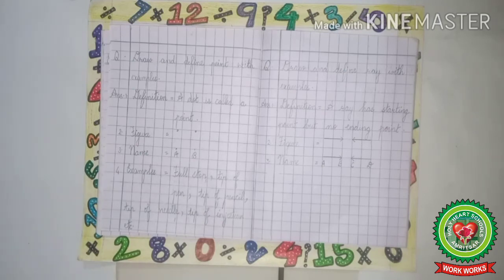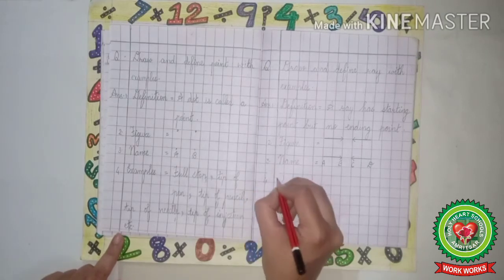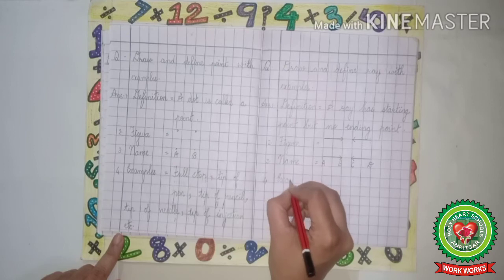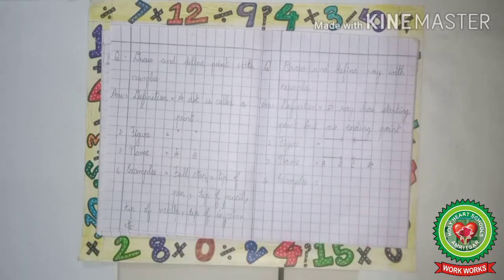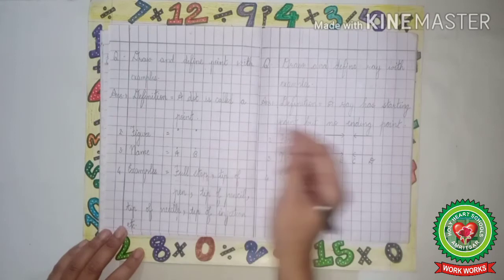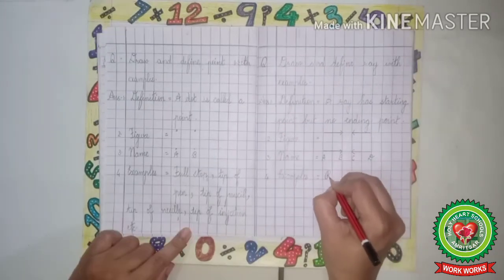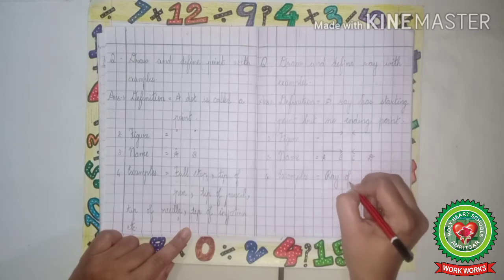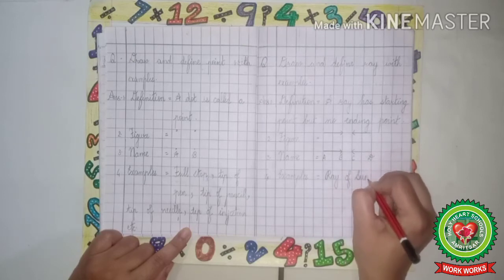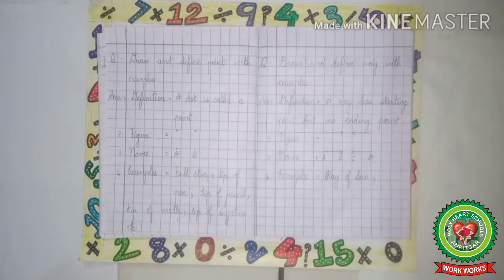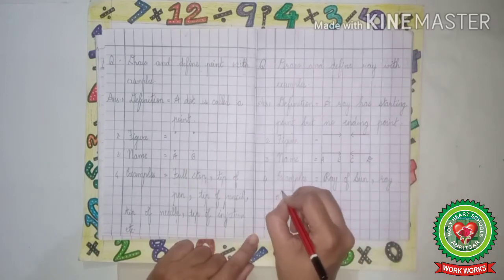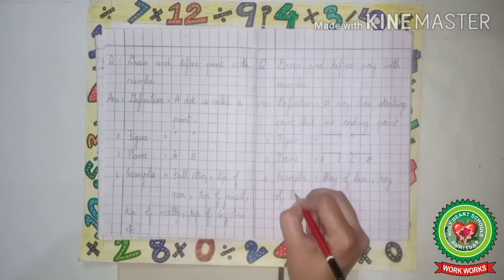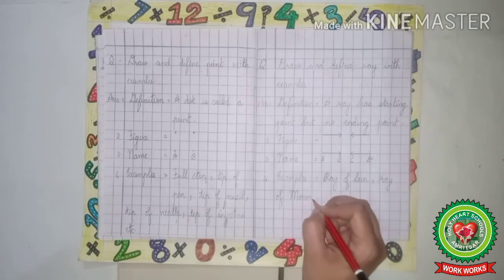Now leave one line. Four dot. The fourth point is examples. Examples equals two. Now the examples of ray are ray of sun. So we will write ray of sun, comma.